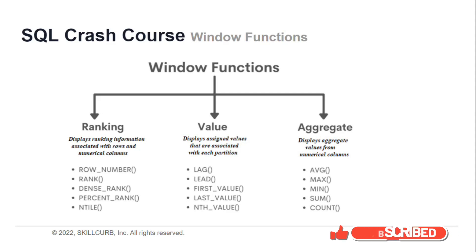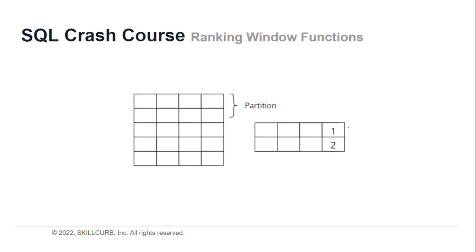There are three main categories of window functions: ranking, value, and aggregation. The ranking window functions display ranking information associated with rows and numerical columns. The value window function displays assigned values associated with each partition, while the aggregate window functions display aggregate values from numerical columns.